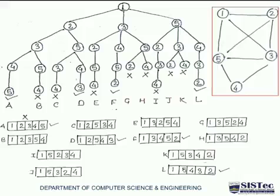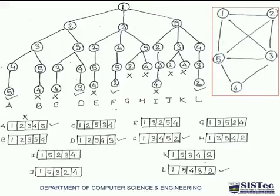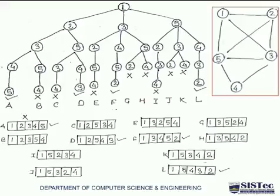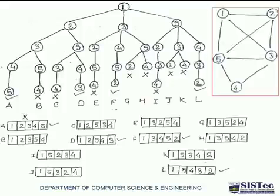As I told you, Hamiltonian cycle is going to be solved using the backtracking approach. Backtracking uses the state space tree for generating the problem solution. It follows depth-first search — first we create the depth, then we go for the next step. Here I have given one graph with 5 nodes. By using this graph, we will generate the state space tree and find all possible solutions.